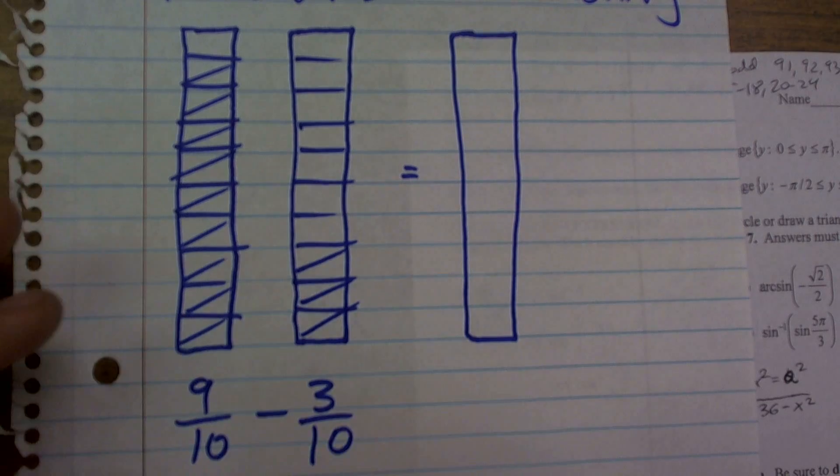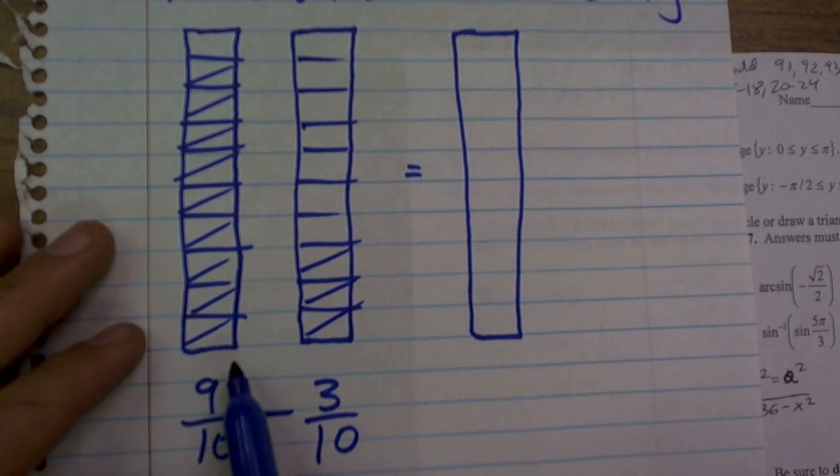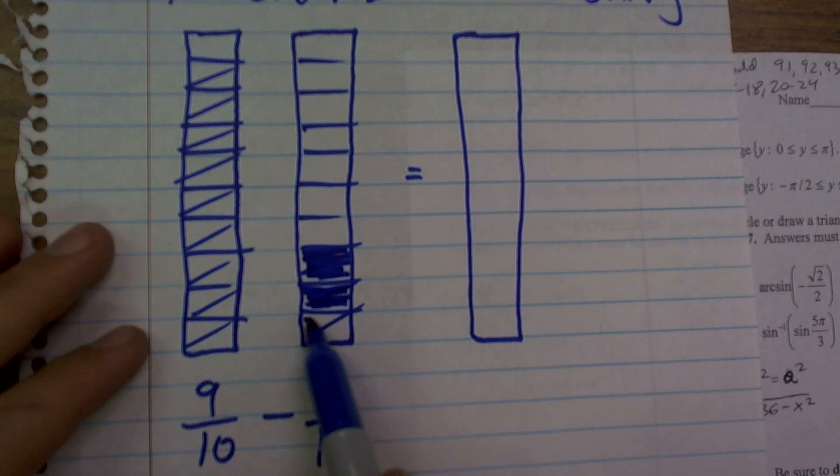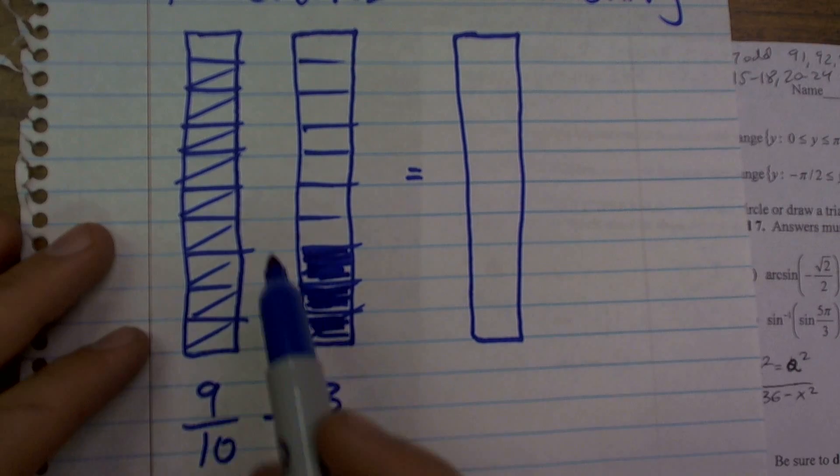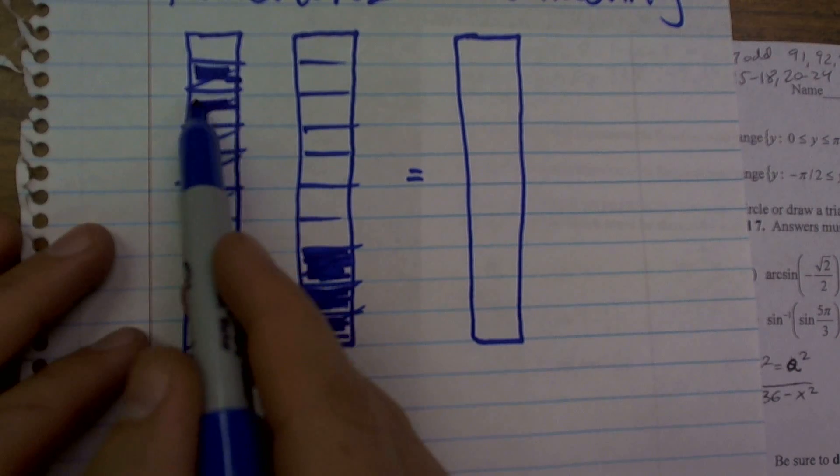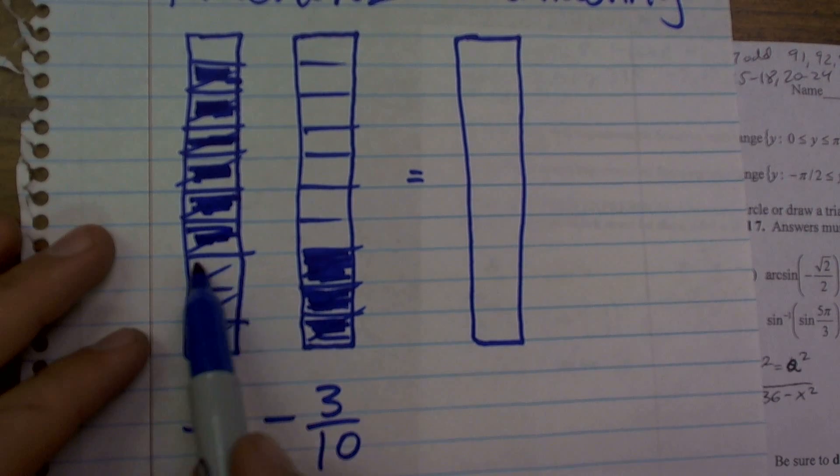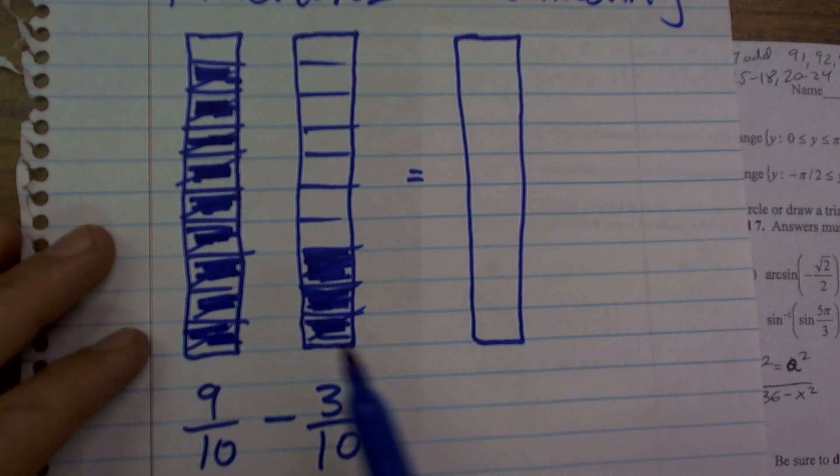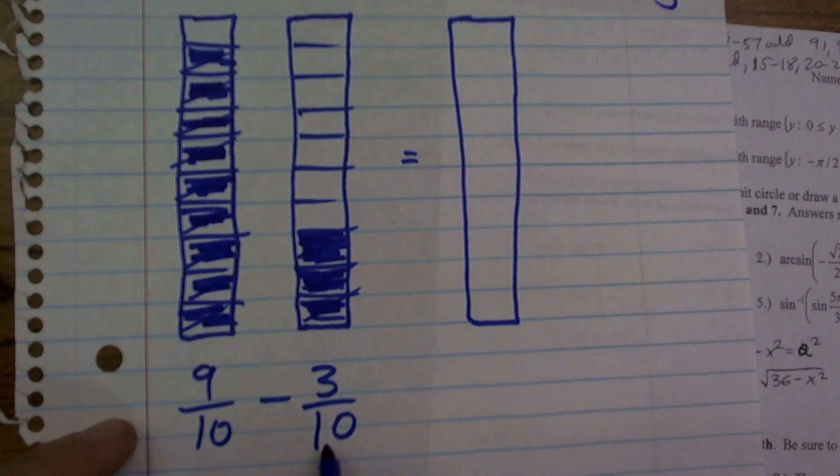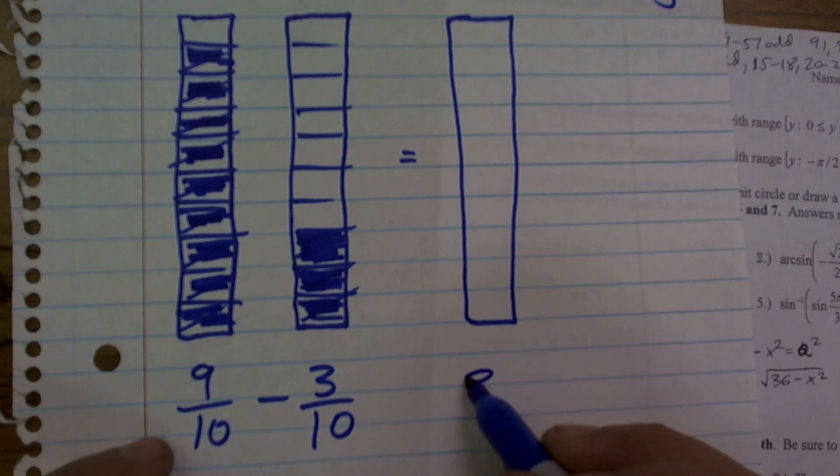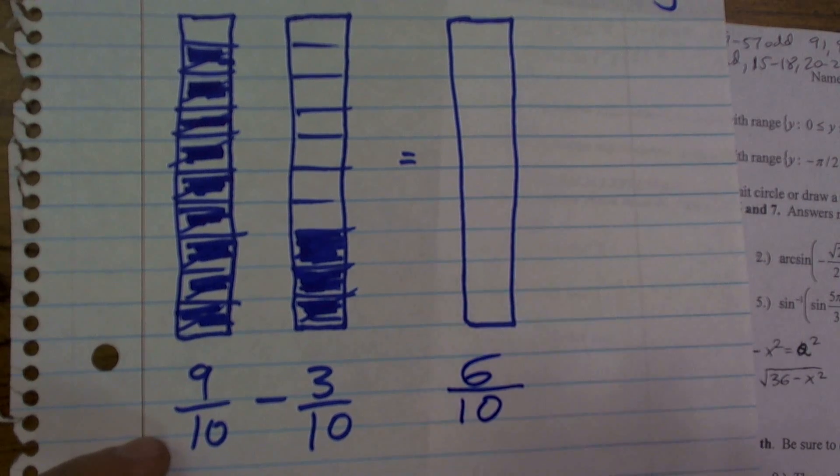So if I have 9 of them and I'm subtracting 3 of them, how many am I going to have left? All you simply need to do is make sure your denominators are exactly the same. And what you'll notice is, since my denominators are the same, all I simply do is subtract my numerators. So 9 minus 3 gives me 6/10.